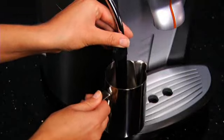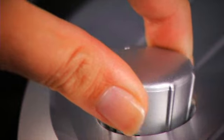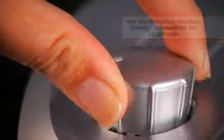Place a large container beneath the hot water wand and press the hot water button. Turn the hot water steam knob clockwise and dispense the solution into the container for 15 seconds. Close the hot water steam knob and empty the container.